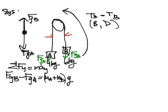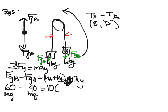So right now I have FGB minus FGA, and you should know I'm using sigma FY equals MAY, is equal to MA plus MB, so the mass of the whole system, times AY. GB is MBG, so that's going to be 60 minus 40 is equal to the two masses combined, which is 10 times AY. We have 60 minus 40 is equal to 10 AY, I can solve for AY and I get 2 meters per second squared.